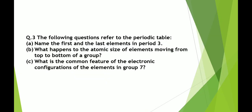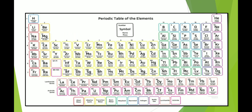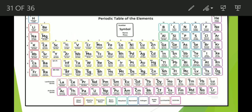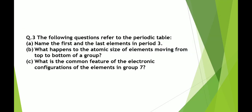Next question refers to the periodic table. Name the first and last elements in period 3. Looking at the periodic table, period 3 starts with sodium and ends with argon. So the first element is sodium and the last element is argon.